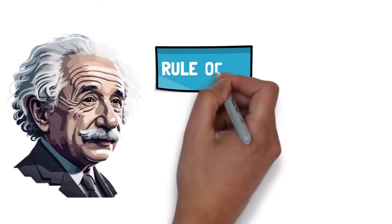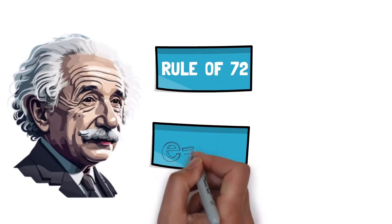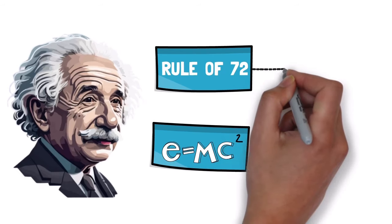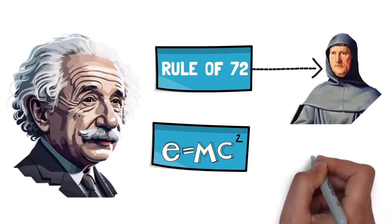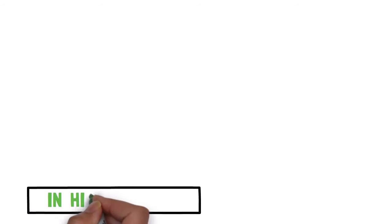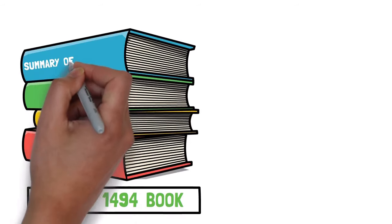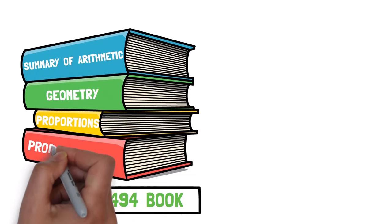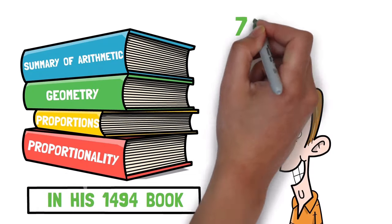Albert Einstein believed that the rule of 72 was a more important discovery than his theory of relativity. The first reference to this rule comes from Luca Pacioli, who is regarded as the father of accounting. In his 1494 book, Summary of Arithmetic, Geometry, Proportions, and Proportionality, he explains the importance of this rule.